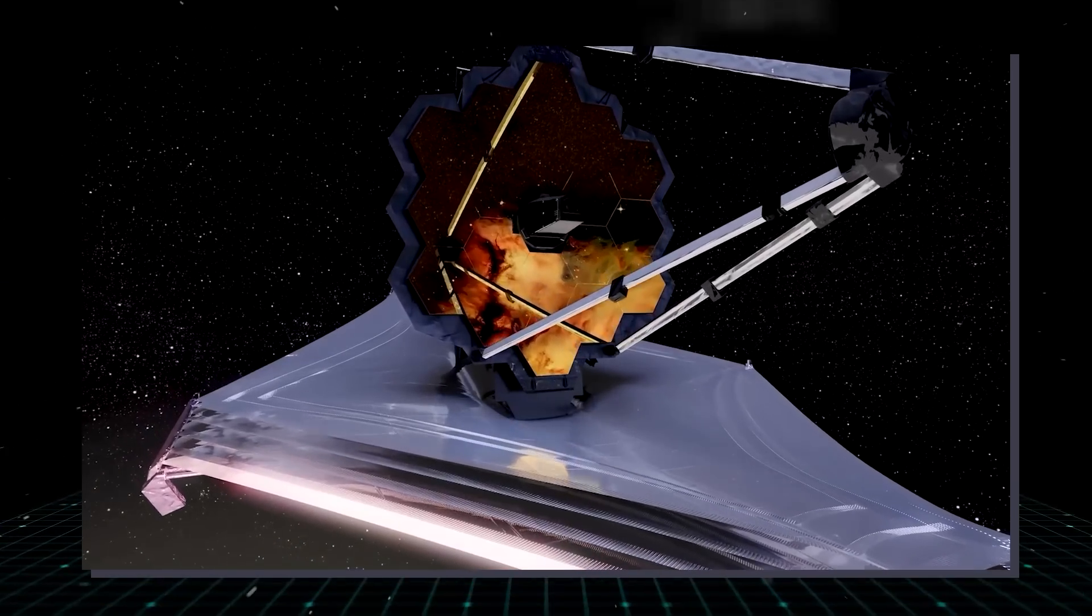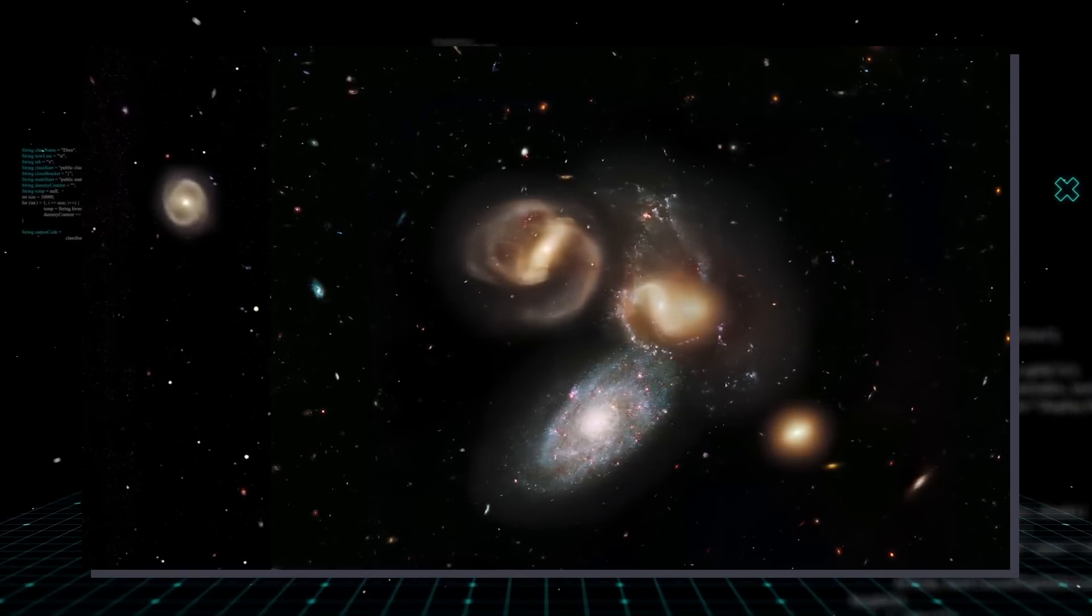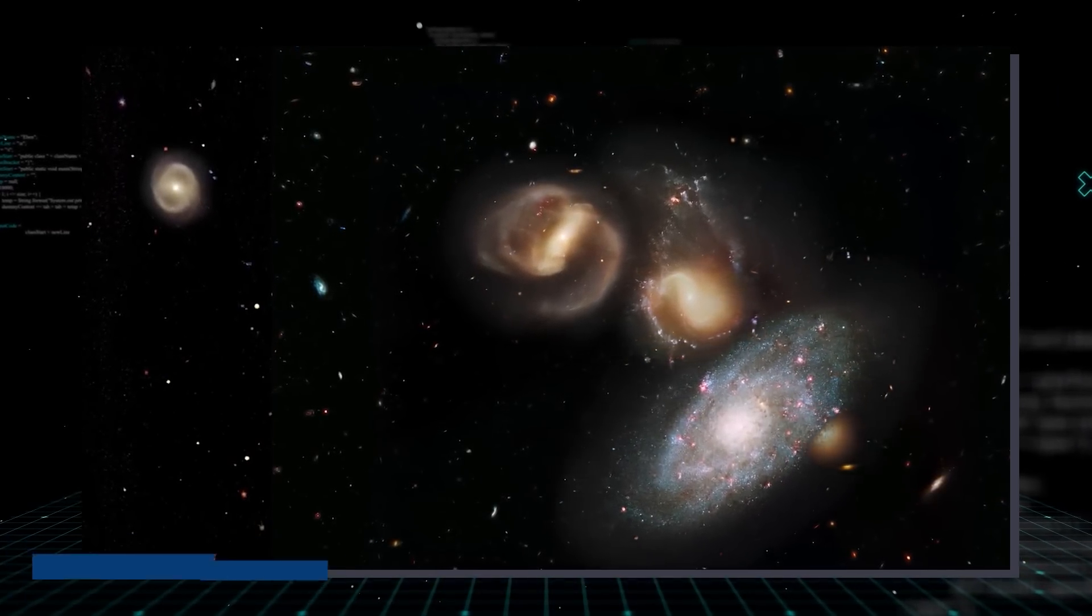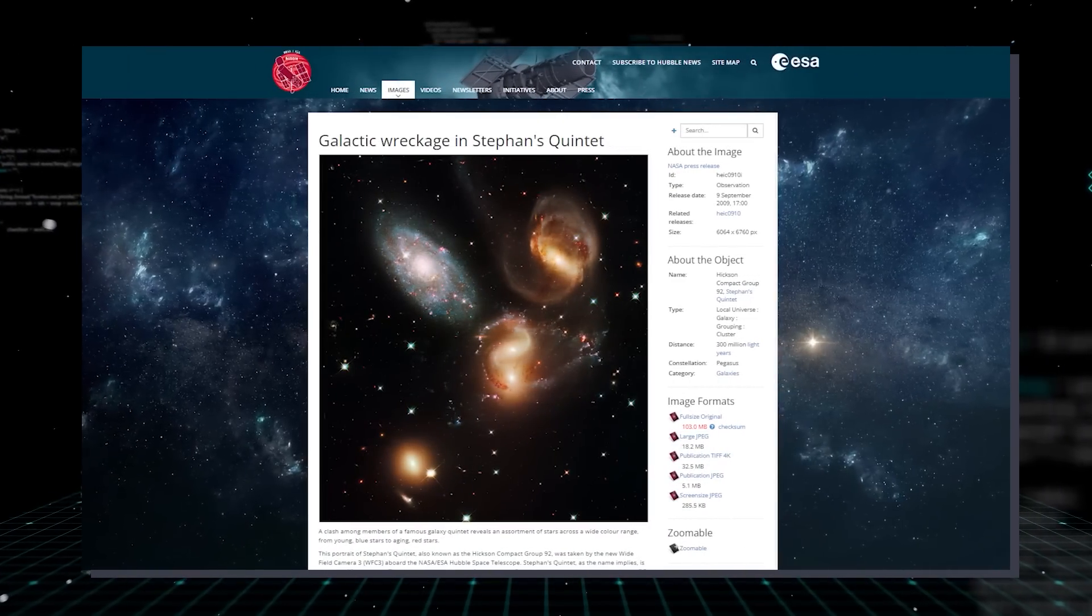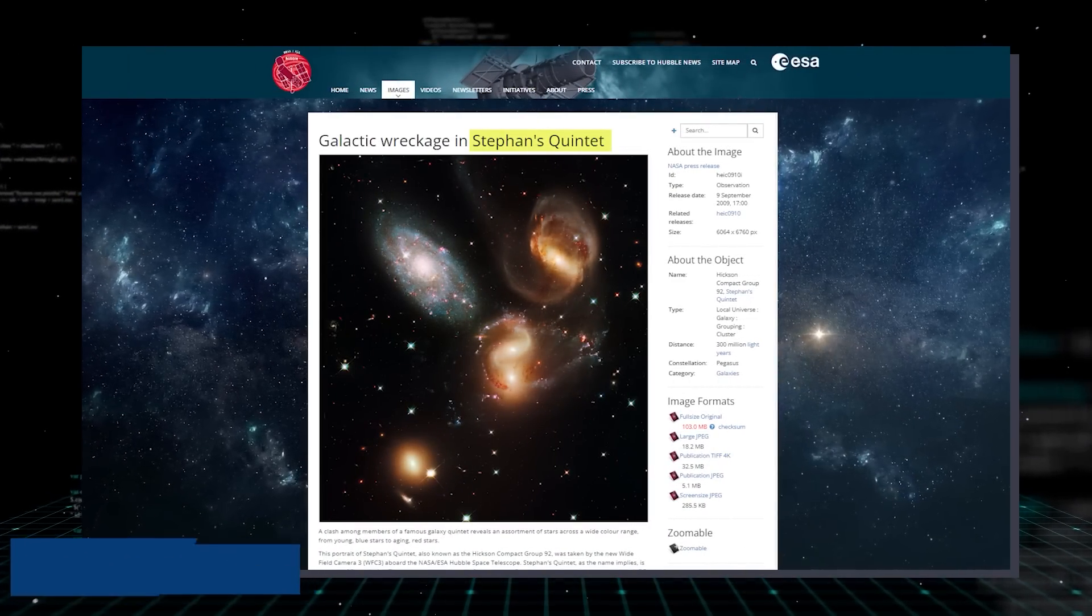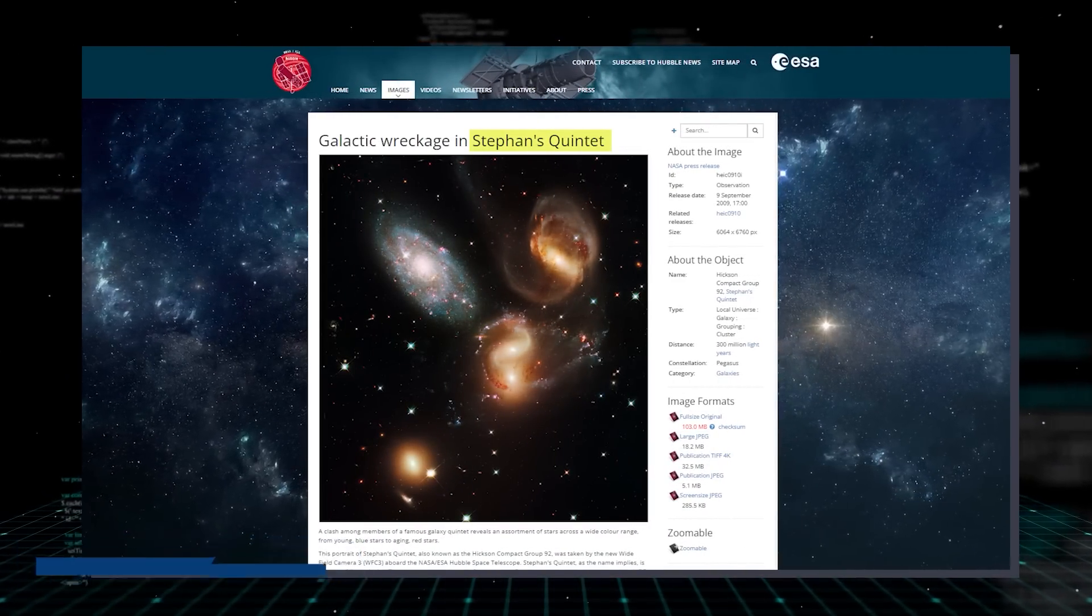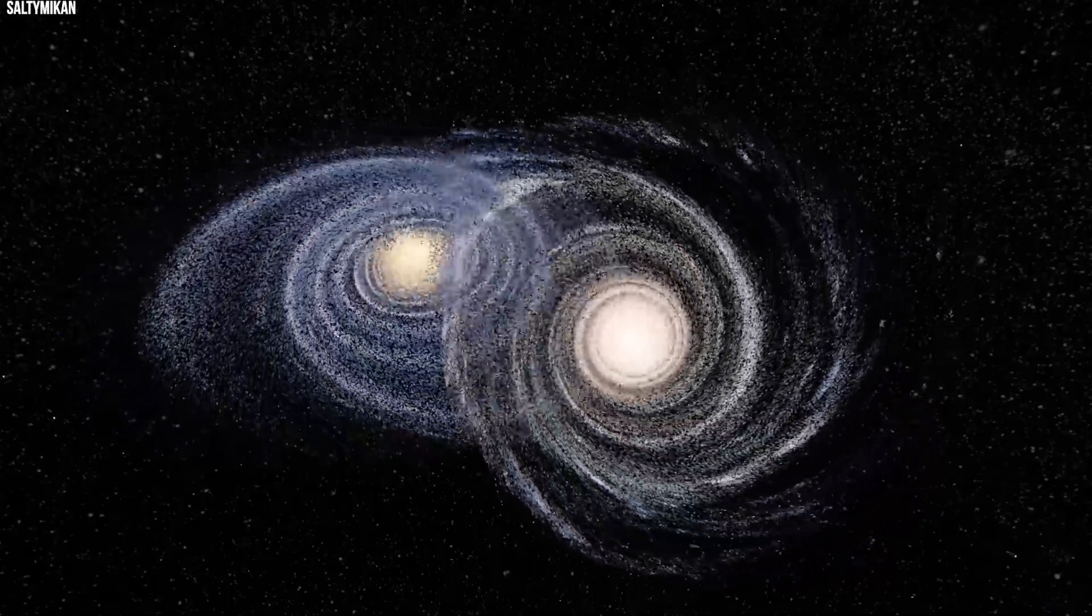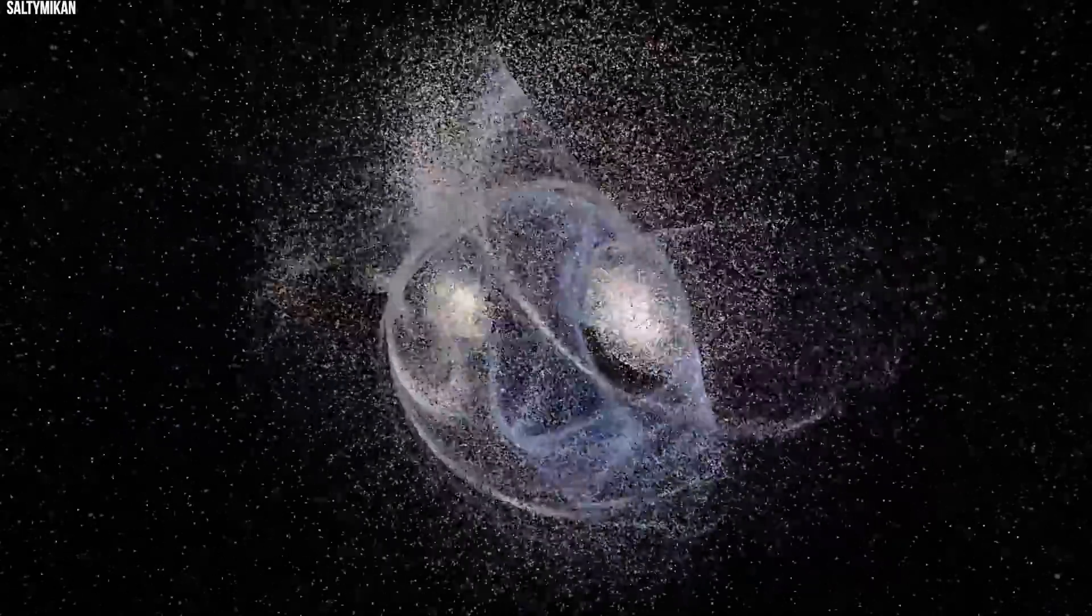Another prime target of the James Webb Space Telescope is the group of five tightly bound galaxies around 290 million light-years away from us. This group of galaxies is called Stefan's Quintet and is located in the Pegasus constellation. According to NASA reports, four of these super close galaxies are continuously whizzing past one another at a dangerously short distance, putting them at the risk of collision.